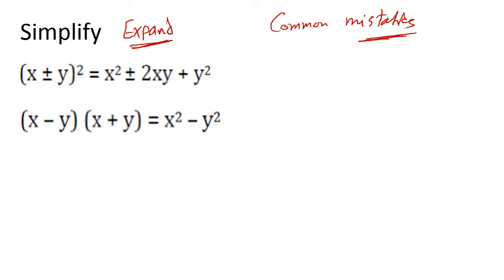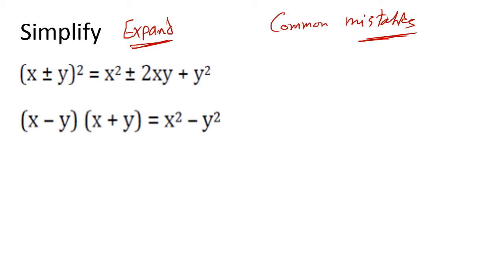Notice that any bracket to the power of two should give you three terms. Let's see how we can expand it. We have two methods: the first method is by writing the bracket out twice, and the second is by following a rule.